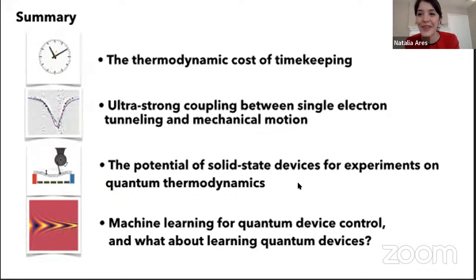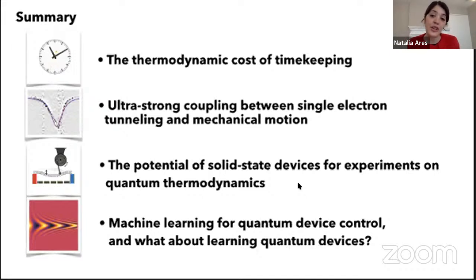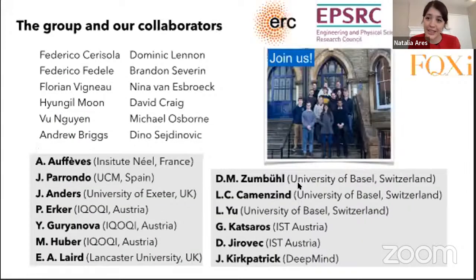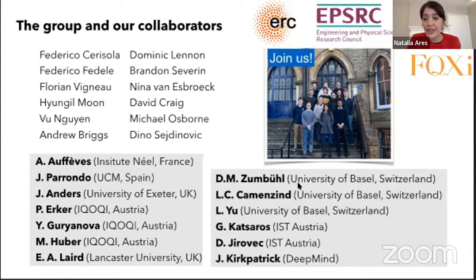To wrap up: I showed you how we measured the thermodynamic cost of timekeeping with mechanics and circuit optomechanics. I showed ultra-strong coupling between single electron tunneling and mechanical motion — very useful for building nanoscale engines — and the potential of solid-state devices for quantum thermodynamics experiments. I also showed our effort on machine learning for quantum device control. I'll briefly thank my group and collaborators — many are missing from the photo due to COVID, but hopefully we'll take a new one soon. Thank you very much.